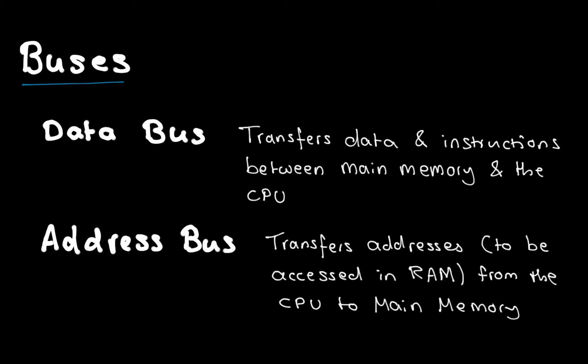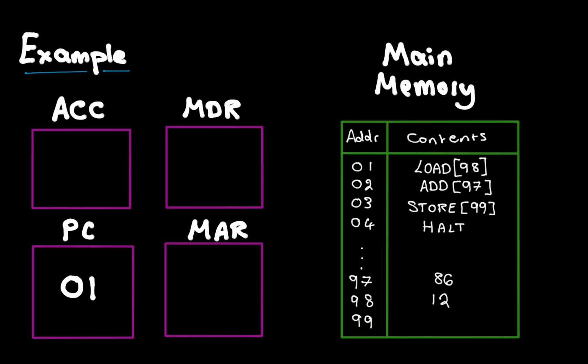I'm going to do an example. We're going to run a program that loads in two different numbers, adds them together, and then stores the result. On the right you can see a main memory table with different addresses — numerical addresses from one to four, then 97 to 99 with the middle skipped, and the contents inside them — along with our four relevant registers. We start with the first address, the first line of code.